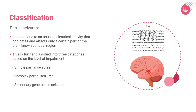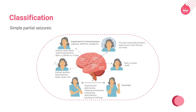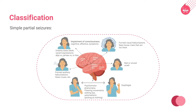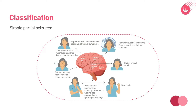Simple partial seizures: an individual with simple partial seizures presents with simple or elementary symptoms like finger or hand shake, dizziness, somatosensory, and other psychic symptoms such as auditory and visual hallucinations. The level of consciousness is not altered in case of simple partial seizures.